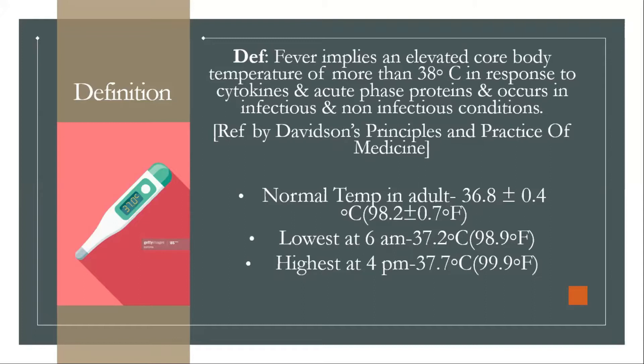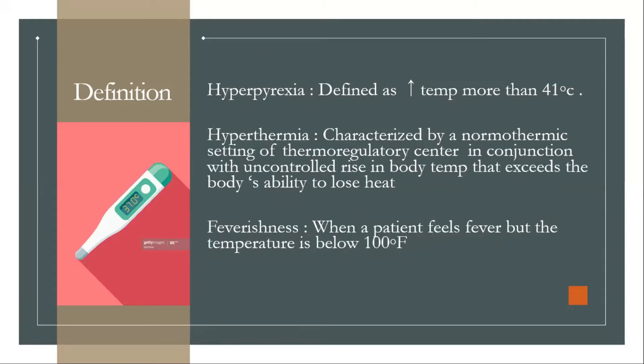There is a diurnal variation of fever in normal adults. Normal temperature in adults is 36.8 plus or minus 0.4 degrees Celsius. The lowest recorded is at 6 am, at 37.2 degrees Celsius, and the highest at 4 pm, at 37.7 degrees Celsius. Hyperpyrexia is defined as an increase in temperature more than 41 degrees Celsius.